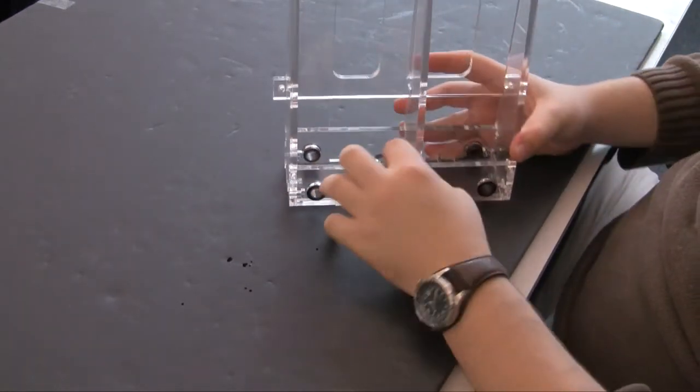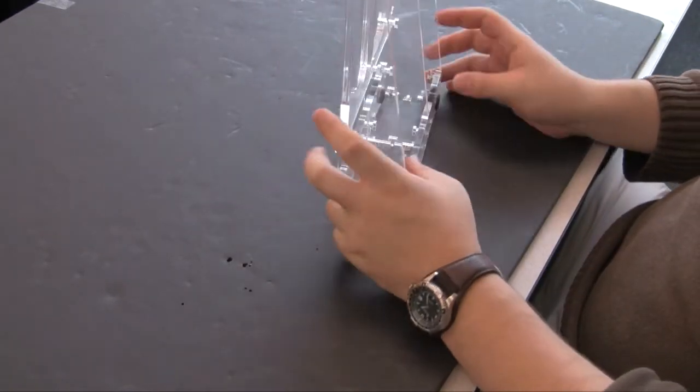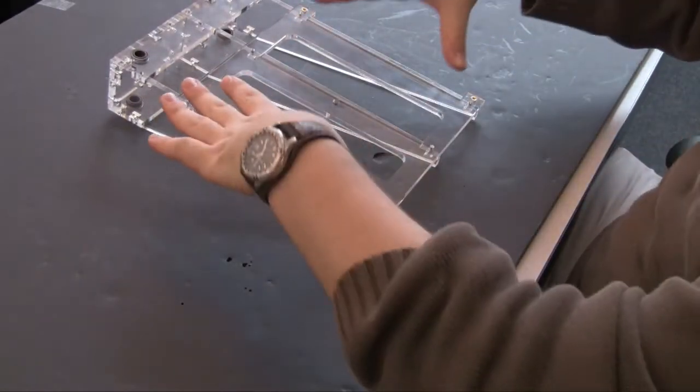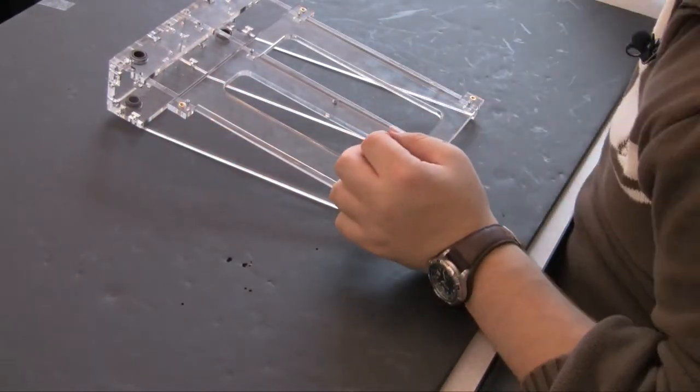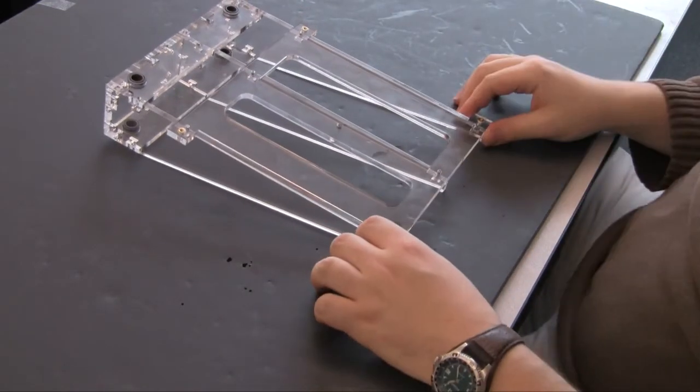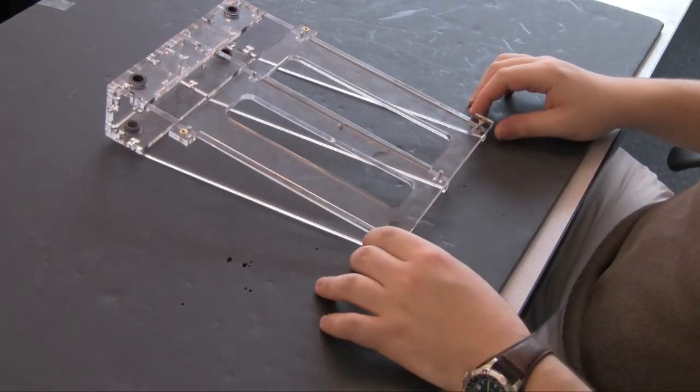Once everything is together, insert screws and tighten. Once that is done, you will need to place the Z-table top plate from above and secure it with 632 screws.